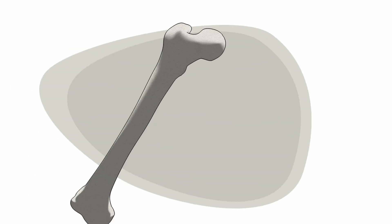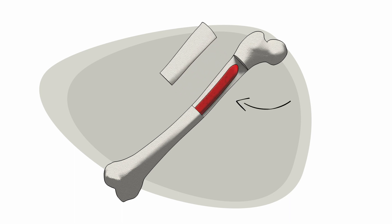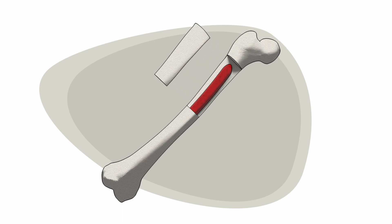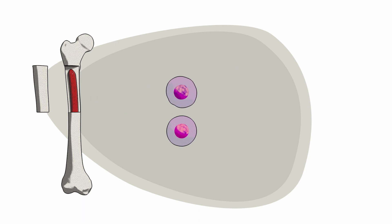CML is a type of blood cancer that starts in the bone marrow, the soft inner part of the bone where stem and blood cells are formed.